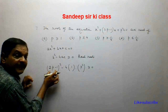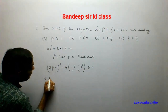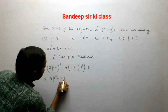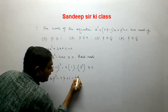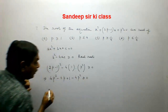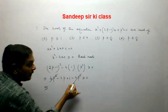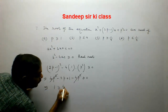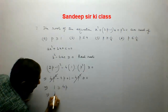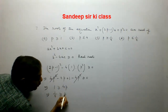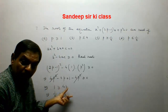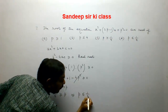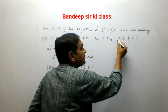Expanding using (a-b)² formula: 4p² - 4p + 1 - 4p² ≥ 0. The 4p² terms cancel, giving 1 - 4p ≥ 0, so 1 ≥ 4p, which means p ≤ 1/4. Therefore option D is the correct answer.